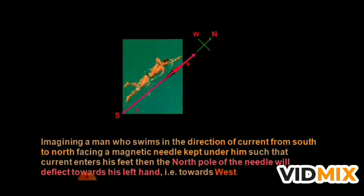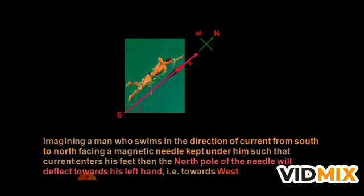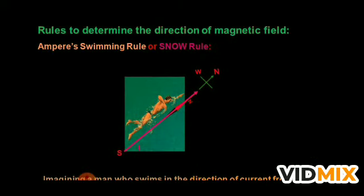To use this rule, imagine a man who is swimming in the direction of current from South to North. His head is toward North and his feet toward South. He is facing the magnetic needle kept under him, such that the current enters from his feet. Then the North pole of the needle will deflect towards his left hand, which is towards the West.